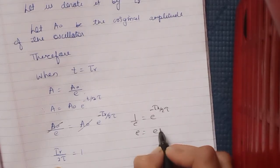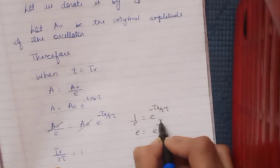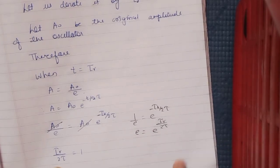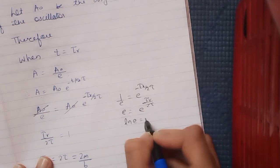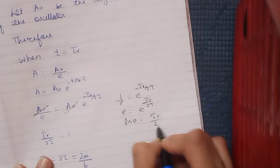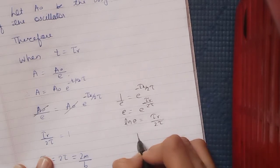So I get e = e^(τᵣ/2τ). I will take log of both sides: log(e) = τᵣ/2τ. We know that logₑ(e) = 1, so 1